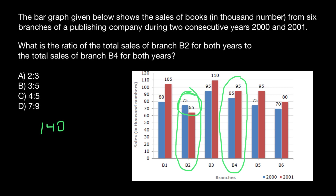Branch B4 sales for two years, 2000 and 2001, is 85 plus 95, which is going to be 180. So here's our ratio: 140 to 180, comparing branch B2 to branch B4.